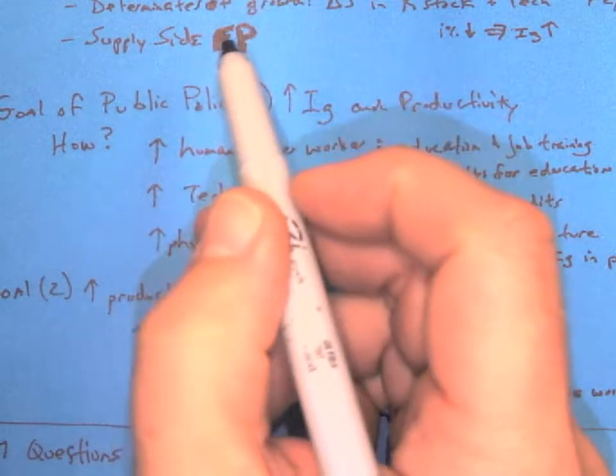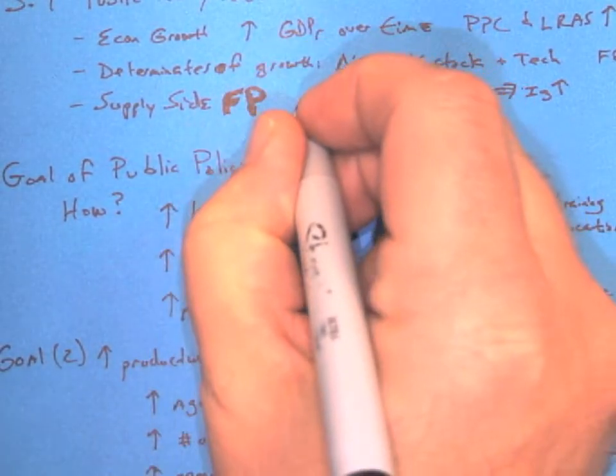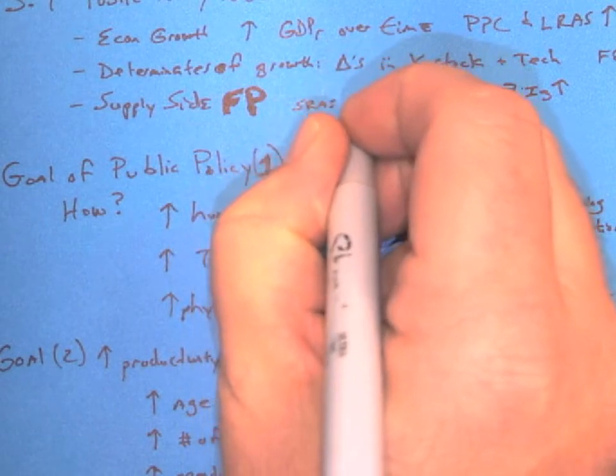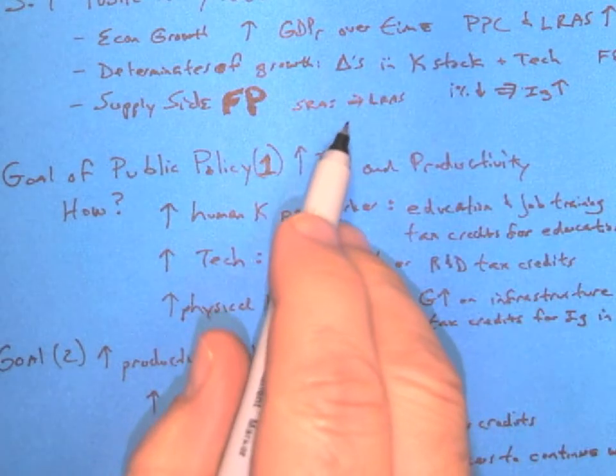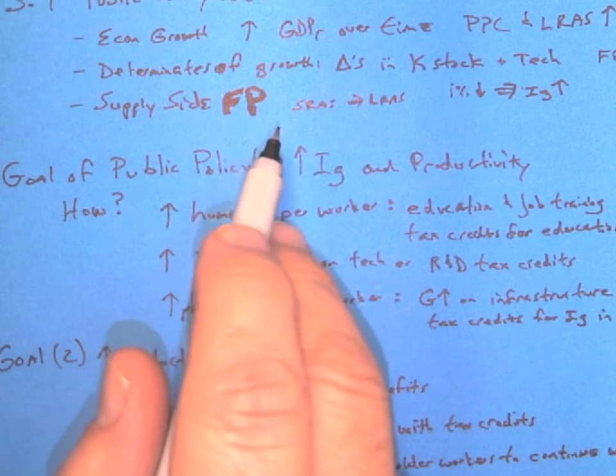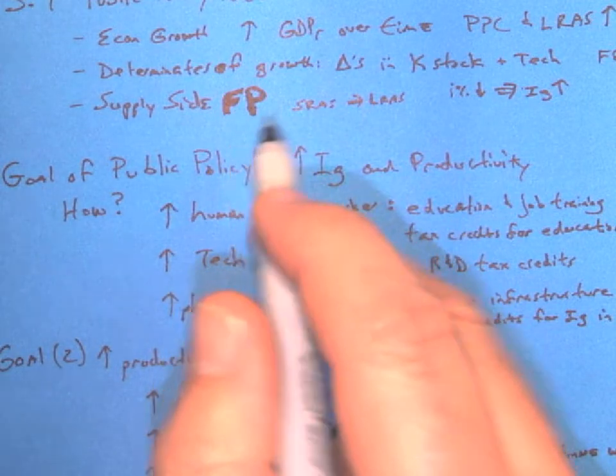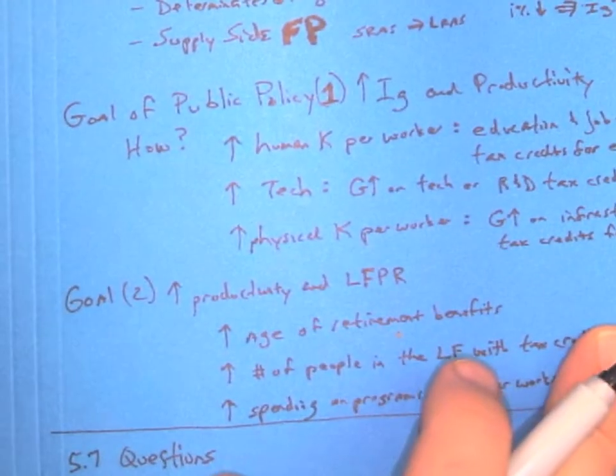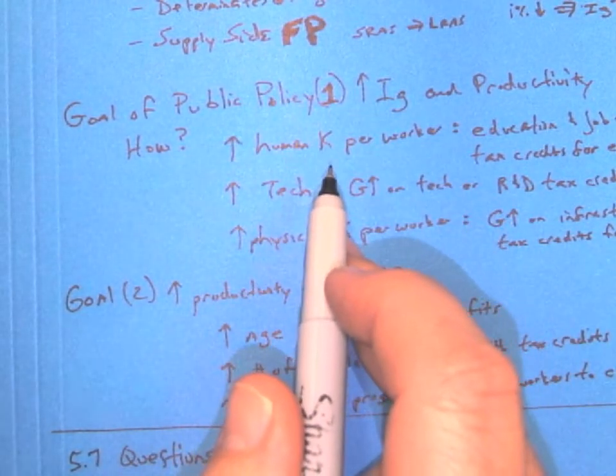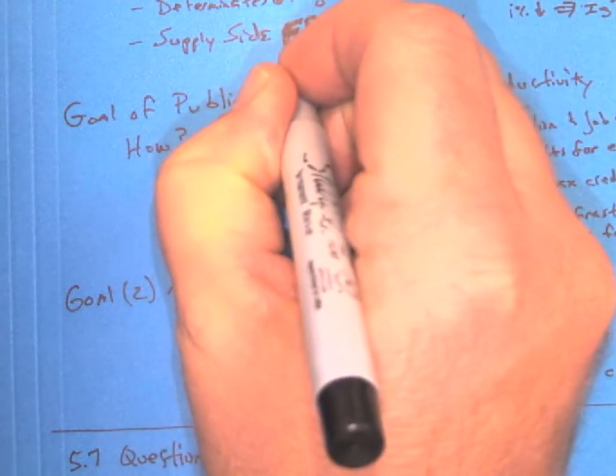So supply-side fiscal policy can become very important. Supply-side can be shown with short-run aggregate supply, which leads to long-run aggregate supply. And that's our businesses, our supply chain, our factories. So any kind of fiscal policy in the supply-side is going to be when we have things like how do we do it? Increase capital per worker. So the things I was talking about are going to be any fiscal policy, remember, is taxes or government spending.